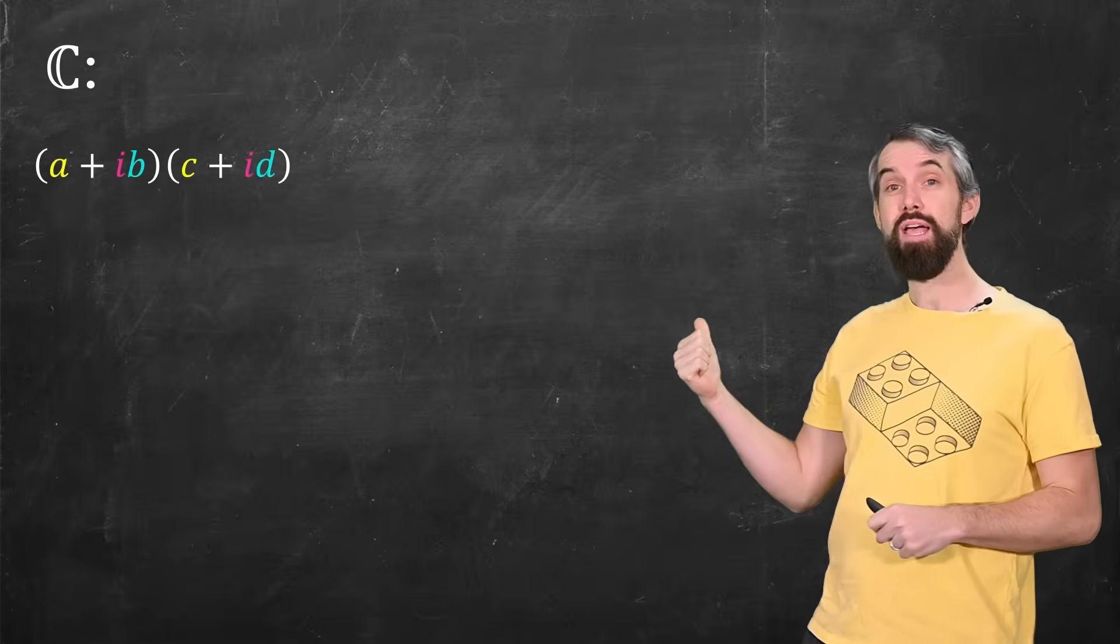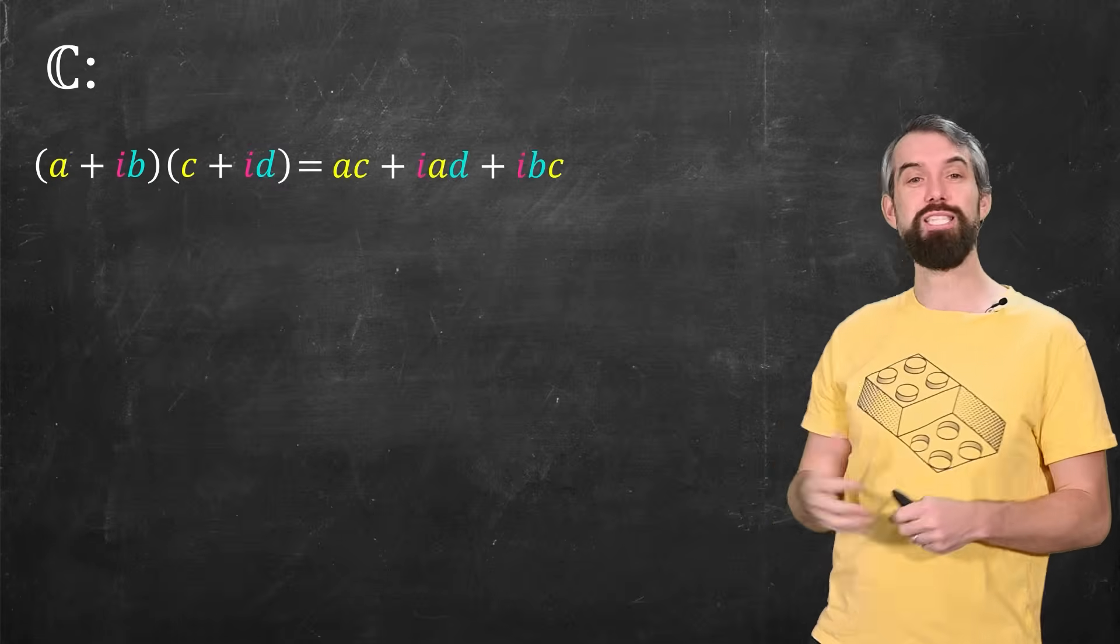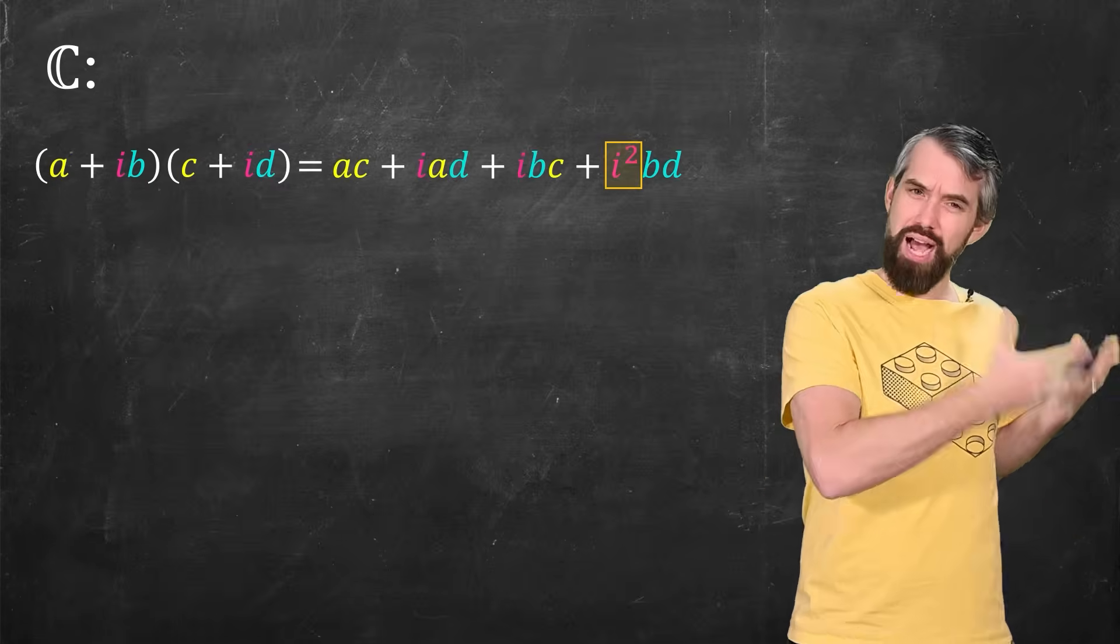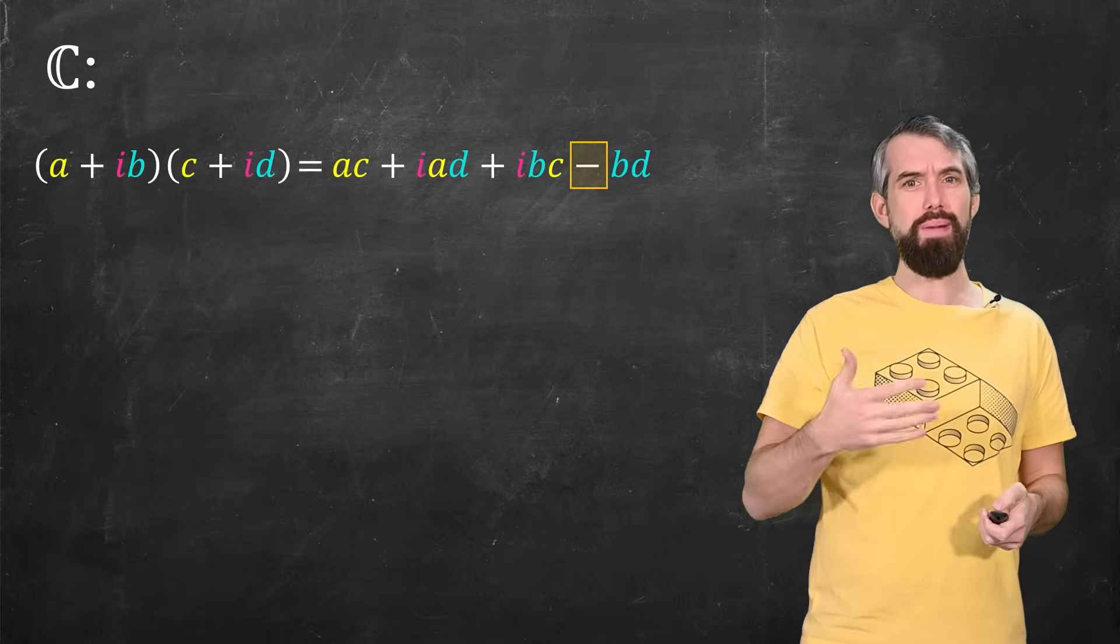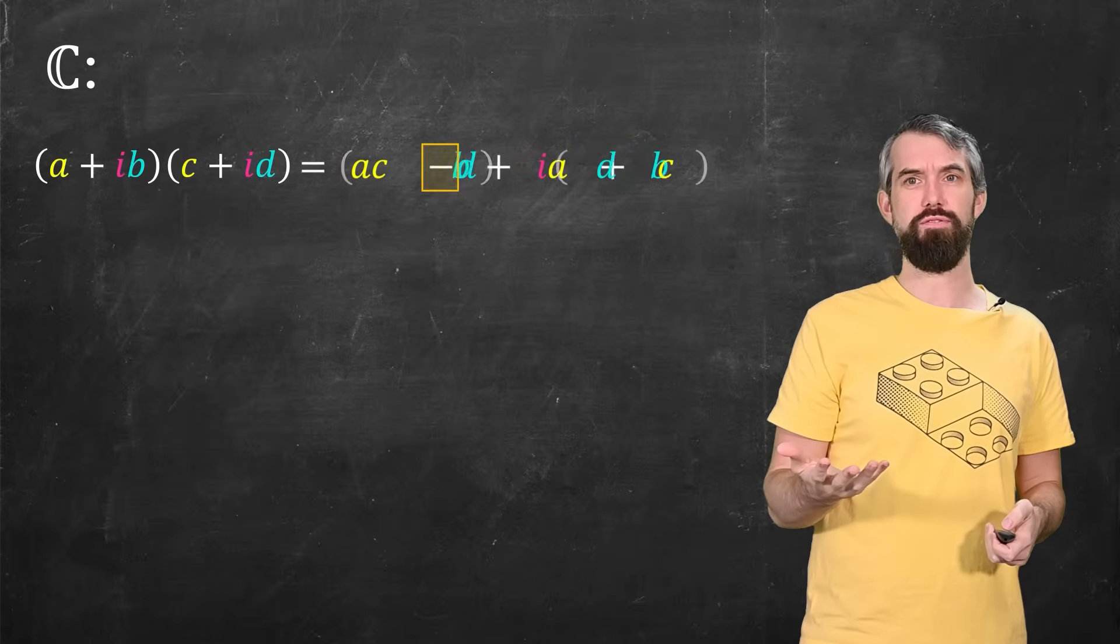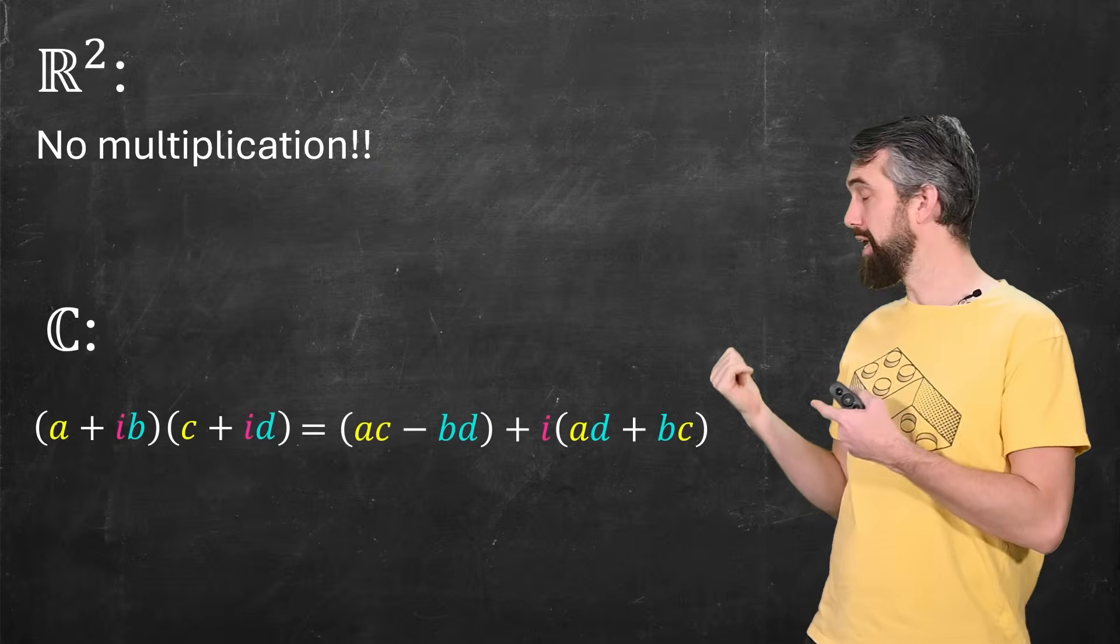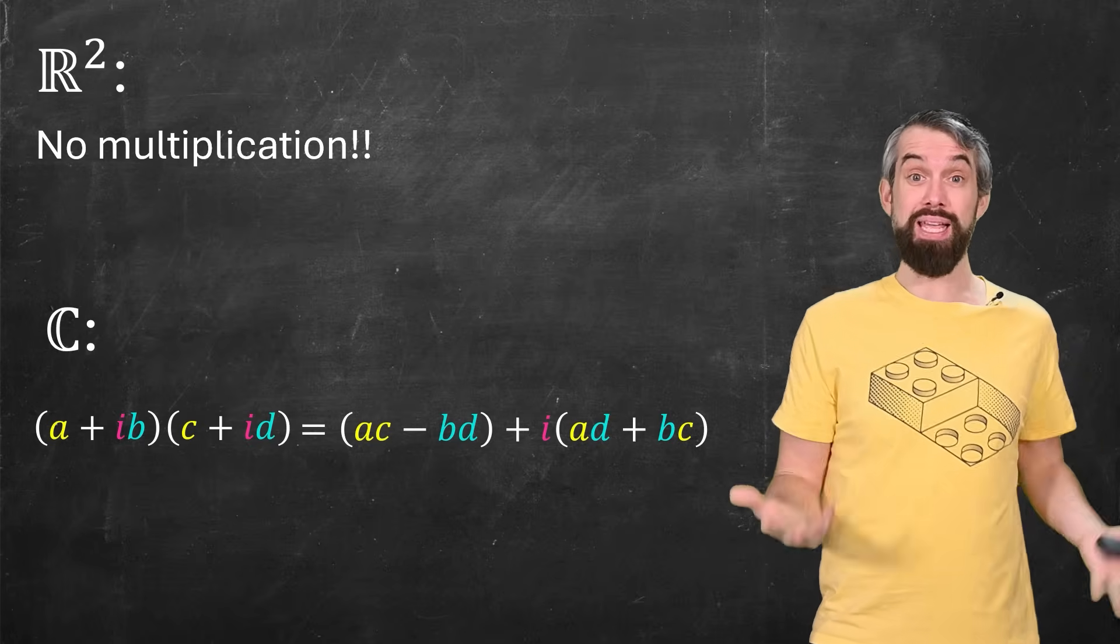If I take a plus ib and I multiply c plus id, it expands out like this, notice that there's an i squared in it. Well, we defined i to be the square root of minus one. So i squared is minus one. And indeed, if I rearrange that, I'm just going to get this value. What about for the real plane? Well, the real plane doesn't have a standard or natural notion of multiplication.